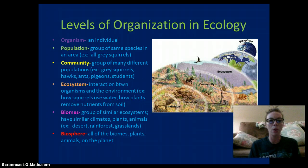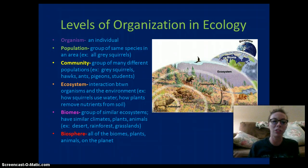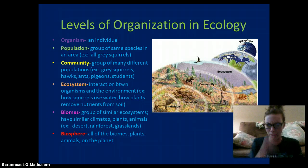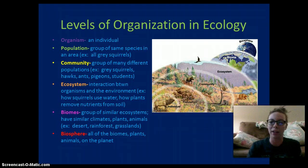Biomes are going to be a group of similar ecosystems with similar climates, plants, and animals. Examples would be deserts, rainforests, and grasslands. We'll talk more about them at the end of this unit. And finally, the biosphere, which is all the biomes, the plants, and the animals on our planet — essentially, it's all life on Earth.